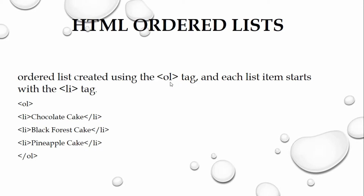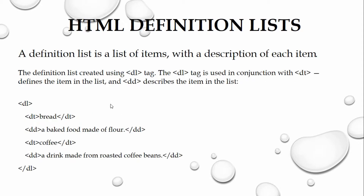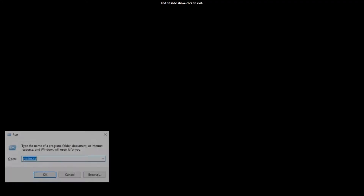The only difference between OL and UL is the tag name. A definition list is created using the DL tag. The DL tag is used in conjunction with DT, which defines the term, and DD, which describes the item. So you will have DL, then DT, then DD. In order to see an example, we need to open Notepad.